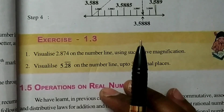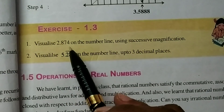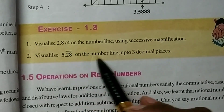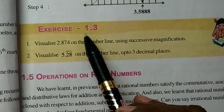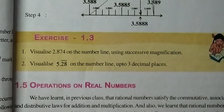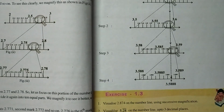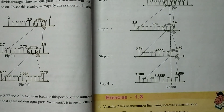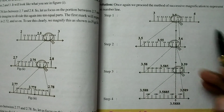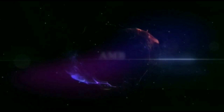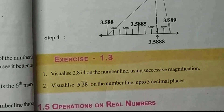In this video I would like to explain how to visualize 2.874 and 5.28 bar on the number line by using successive magnification, from Exercise 1.3, Class 9 Mathematics, from AP and Telangana state boards. Successive magnification is the method used to represent decimal numbers on the number line.